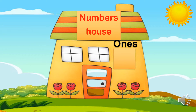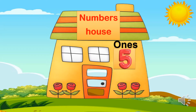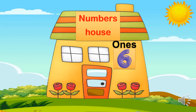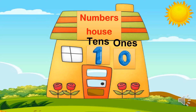Now we have number two — it will sit in the ones room. Then we have numbers three, four, five, six, seven, eight, nine. Now, what is the number after nine? I ask myself: how many digits are in ten? Two digits. So it needs two rooms — ones room and tens room.